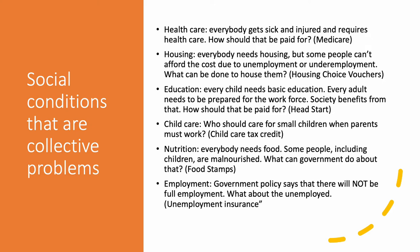For early childhood education, we have Head Start — a government-sponsored program to make sure preschool is available for kids whose parents can't afford it. For childcare, we have child care tax credits that subsidize the cost of paying for childcare for small children. For nutrition — we have SNAP, meaning a government subsidy for basic food necessities. The farming industry actually loves this because they get to sell more products because more people can buy them.